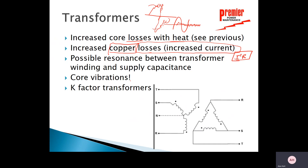A third transformer issue is that resonance can build up between the transformer winding and the capacitance of the system. When we reach the resonant frequency — one over two pi times the square root of LC — we can have unbelievable current flowing in this tank circuit. Core vibrations can also try to dislodge the blocking inside the transformer due to the additional harmonic vibrations.